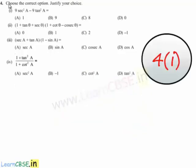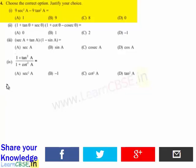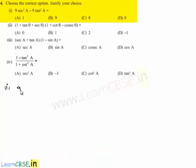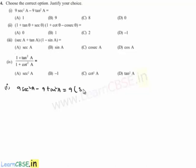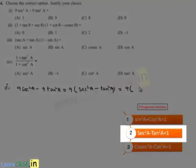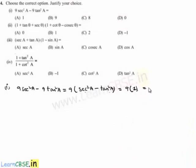Moving on to the fourth question — choose the correct option and justify your choice. For the first bit, the given expression is 9 sec²a - 9 tan²a, which equals 9 × (sec²a - tan²a). Using the identity sec²a - tan²a = 1, this equals 9. So option B is correct for the first one.